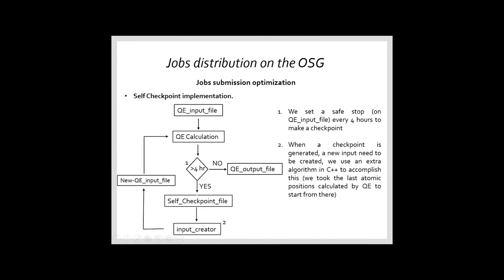If not, we make a checkpoint and we use an input creator. This is an extra algorithm that allows us to create a new input file from the last generation of Quantum Espresso and restart the Quantum Espresso calculation from the last checkpoint file. And start again and repeat if the job is not finished.